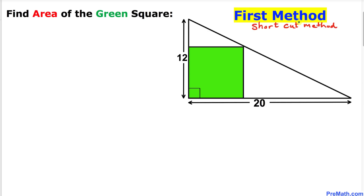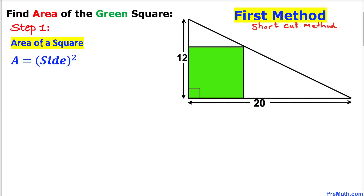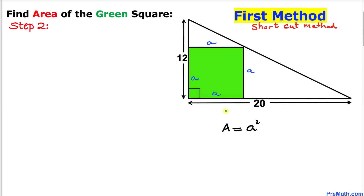Let me show you the first method, which is going to be a shortcut method. First, let's recall the area of a square formula: area equals side squared. If I call this side 'a', then all sides are going to be 'a' as well, so the area of this square is simply a squared.